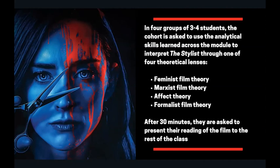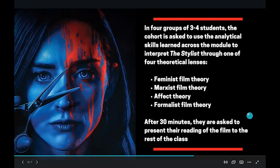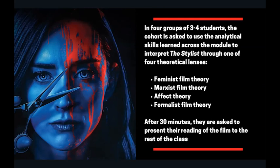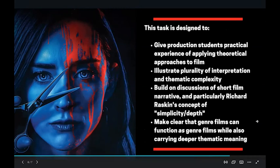Those approaches are: feminist film theory — what the film has to say about gender; Marxist film theory — what it says about class and power structures; affect theory — how the film elicits a physical or emotional response; and formalist film theory, which functions as a kind of control group where students are free to interpret the film using formal analysis skills. I give them 30 minutes to put together a cohesive argument to report back to the class, with the aim of showing how the film can be interpreted through a particular theoretical lens. The arguments differ from year to year and I always receive nuanced, passionate responses.